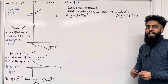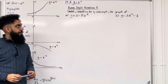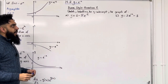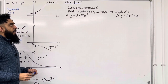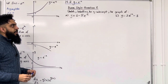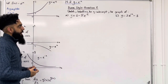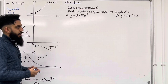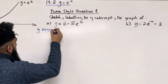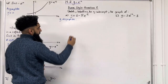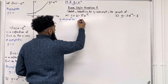I'll be implementing these key facts within exam style questions. Let's look at exam style question 1: sketch, labelling the y-intercept, the graph of part a, y equals 6 minus 5 e to the power x; part b, y equals 2 e to the power minus x minus 3. For part a, the first step is to find the equation of the asymptote. The constant term on the outside is 6, hence the equation of the asymptote is y equal 6.